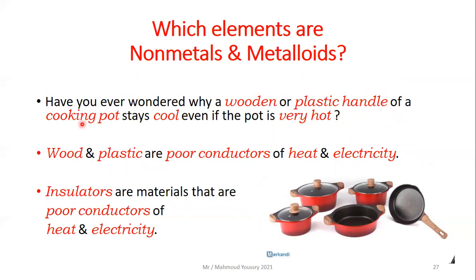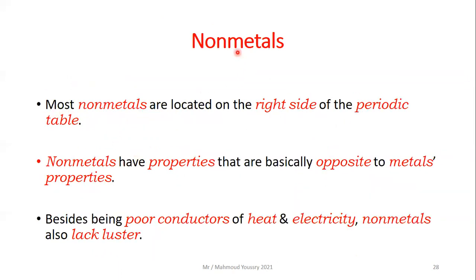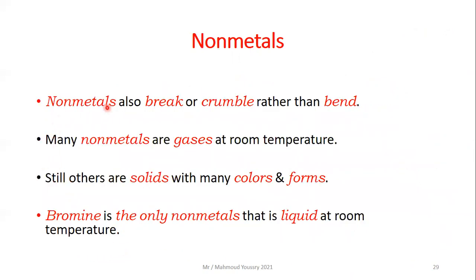Have you ever wondered why a wooden or plastic handle of a cooking pot stays cool even if the pot is very hot? This is because wood and plastic are poor conductors of heat and electricity — they are insulators. Insulators are materials that are poor conductors of heat and electricity. Most non-metals are located on the right side of the periodic table. Non-metals have properties that are basically opposite to metals: they lack the shiny luster of metals, and they break or crumble rather than bend. Many non-metals are gases at room temperature.